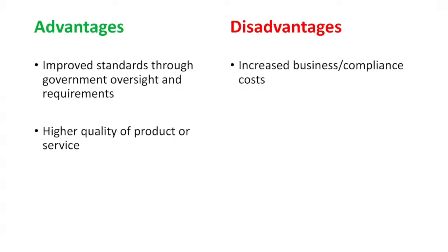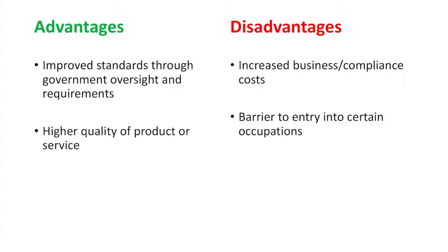However, much like prohibitions, licenses are not a perfect solution. The requirement of licenses increases business costs and legal compliance costs, which could mean higher prices to consumers. With regards to occupational licensing, this could limit the number of people entering a profession such as teaching. The requirements necessary to join a certain field may be high enough to restrict access to a privileged group. This shortage of supply in the labour market could lead to higher wage rates and consequently higher prices for consumers. All in all, licenses can be effective at improving consumer welfare, but it can sometimes come at a cost.